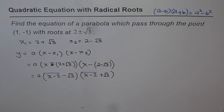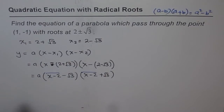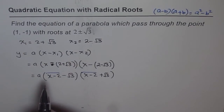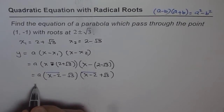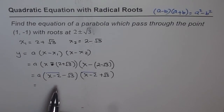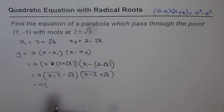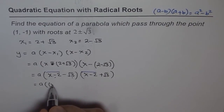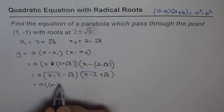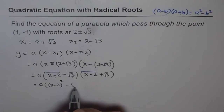That's the shortcut; otherwise you need to expand all six terms and simplify. After simplifying you get a squared minus b squared. So I'll write this as a times (x minus 2) whole squared minus (square root 3) whole squared.